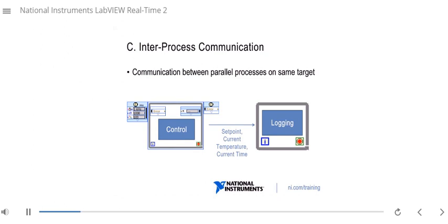Such data might be a set point, the current temperature, the current time. We'll typically want to log those to file occasionally so we keep a record of what the system is doing. We definitely don't want that logging loop to get in the way of our critical control process. So we're going to have to pick a data transfer mechanism that will not get in the way.